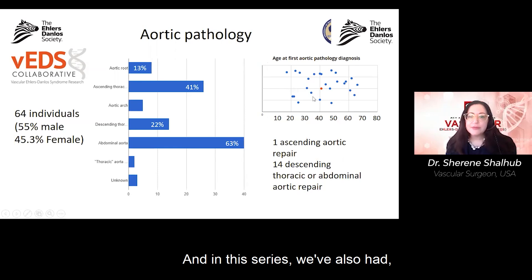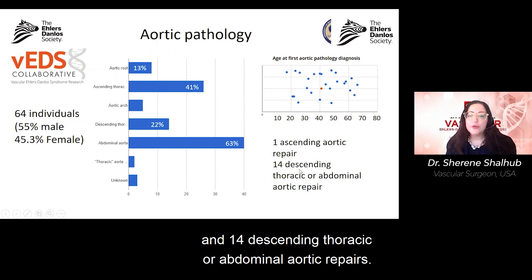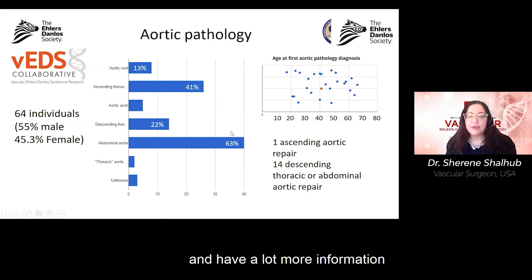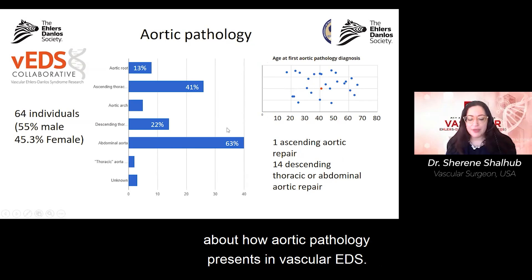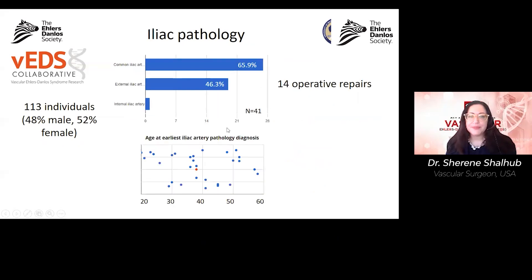In this series, we've also had one ascending thoracic aortic repair and 14 descending thoracic or abdominal aortic repairs. Stay tuned — we will continue analyzing this data and will have much more information about how aortic pathology presents in vascular EDS.